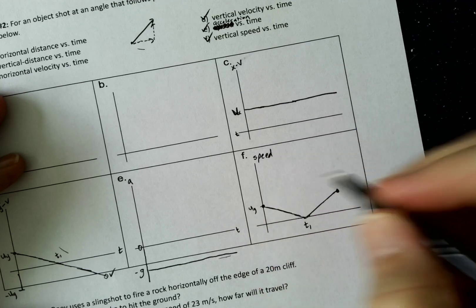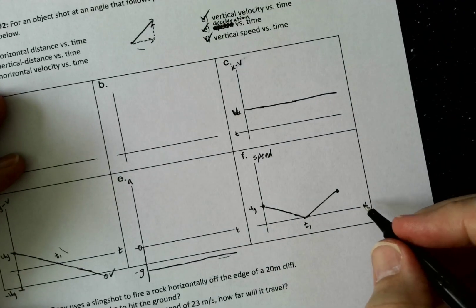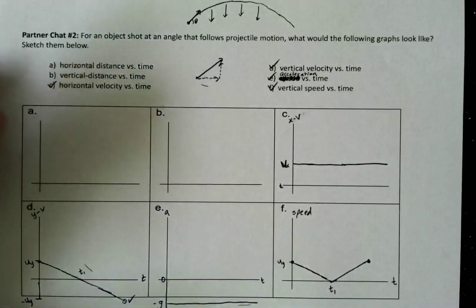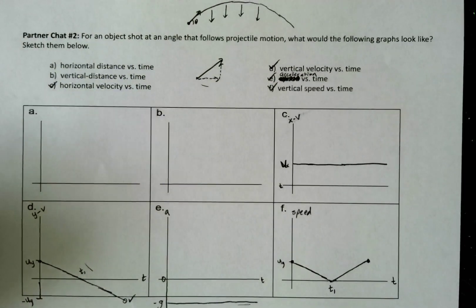So basically, your speed versus time graph is the absolute value of your velocity time graph, the vertical, right?